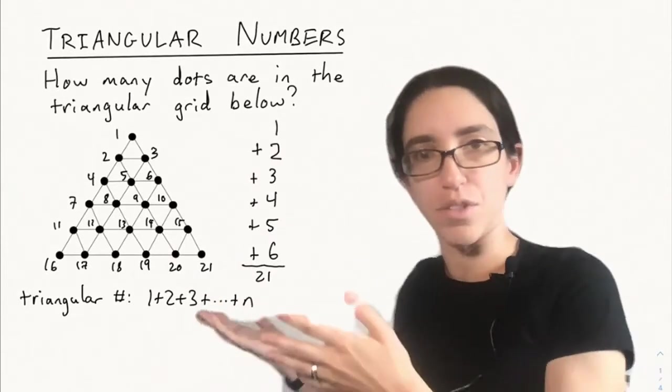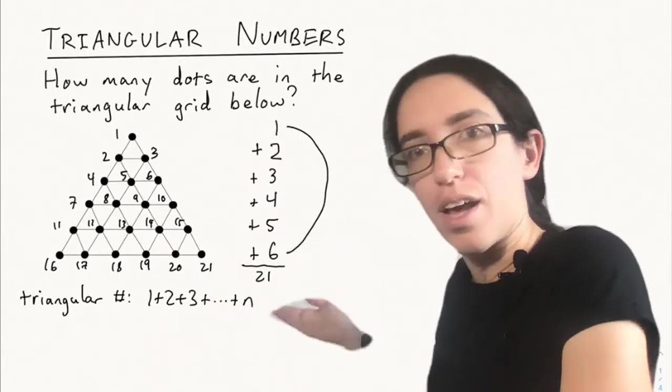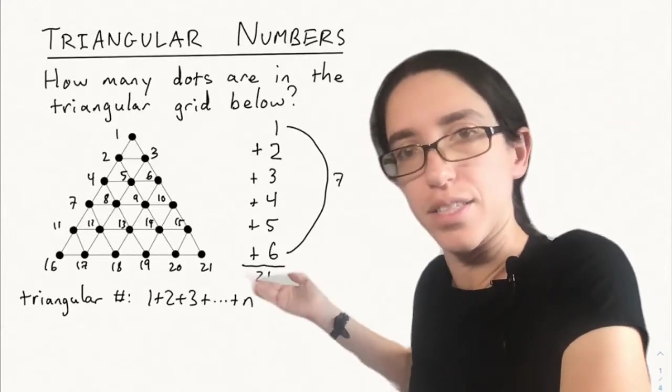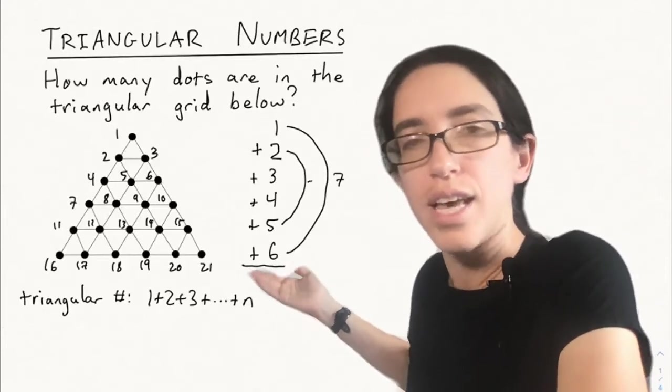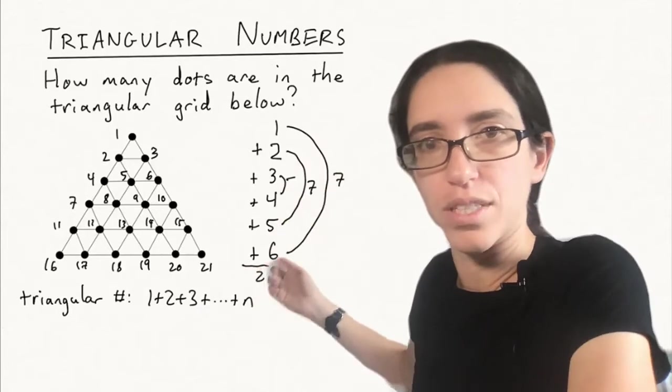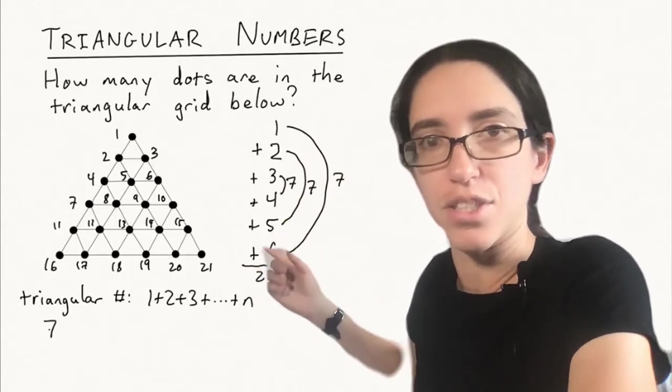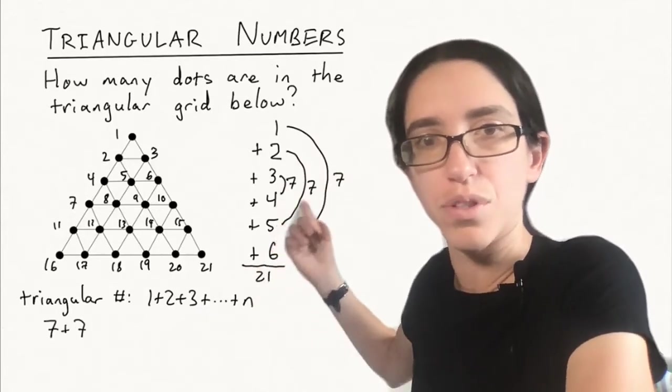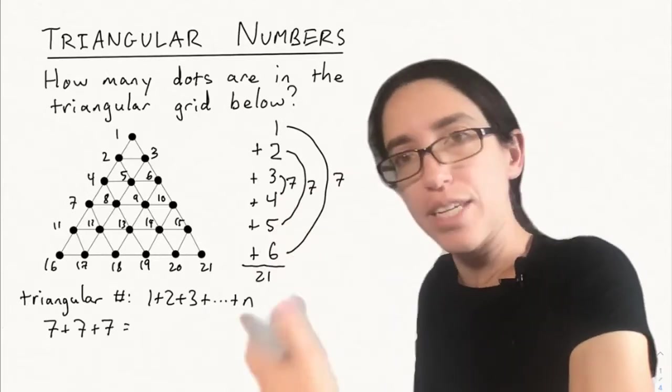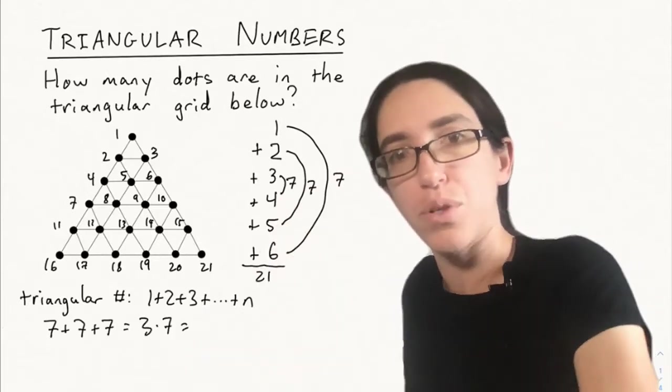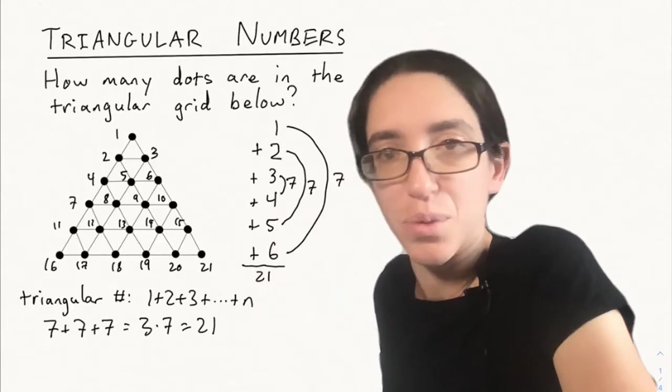So this is an example of a triangular number, the sixth. An easier way we could have added these numbers together from one to six is by adding the first and the last: one and six gets seven, the second and second to last, two plus five is also seven, and three plus four is also seven. So we get three sevens, and we could have just computed three times seven to get 21.